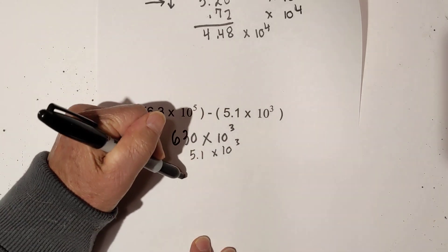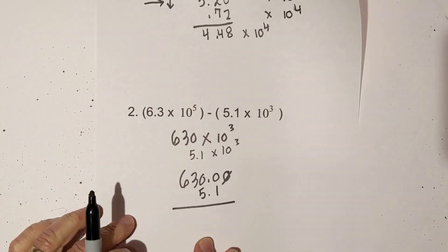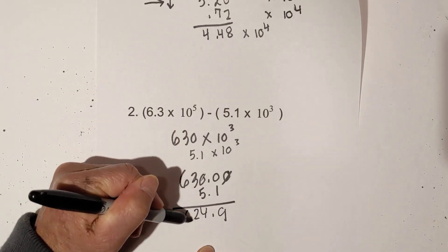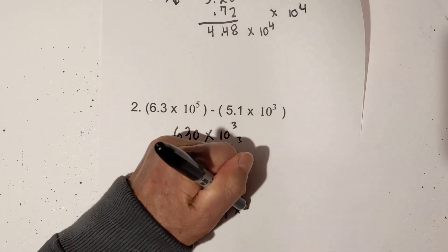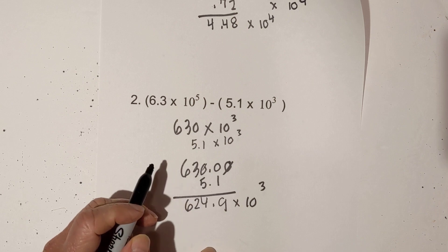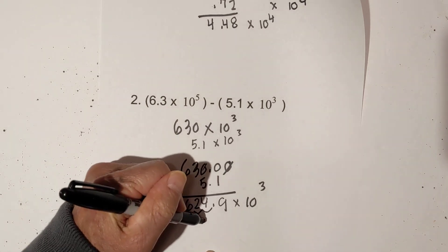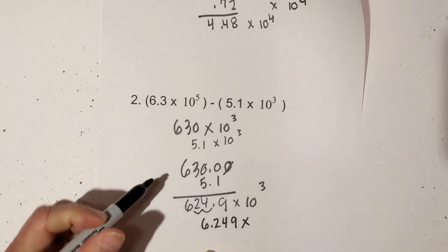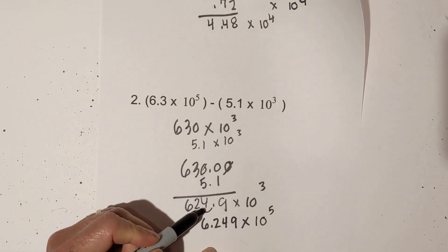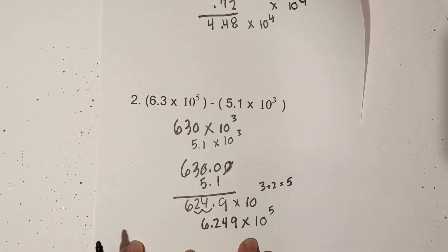Let me rewrite this: I have 630.0 minus 5.1. That becomes 624.9 times 10 to the 3rd. Now in scientific notation the first number needs to be between 0 and 10, so I need to move the decimal two places to the left — one, two — so it becomes 6.249. Since the number got smaller the exponent gets larger, so it becomes 6.249 times 10 to the 5th.